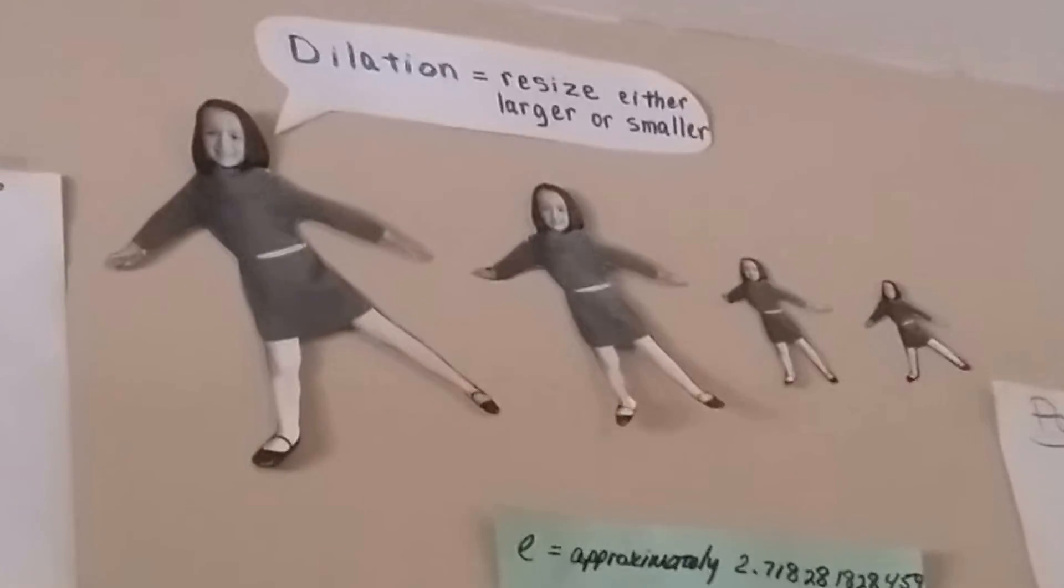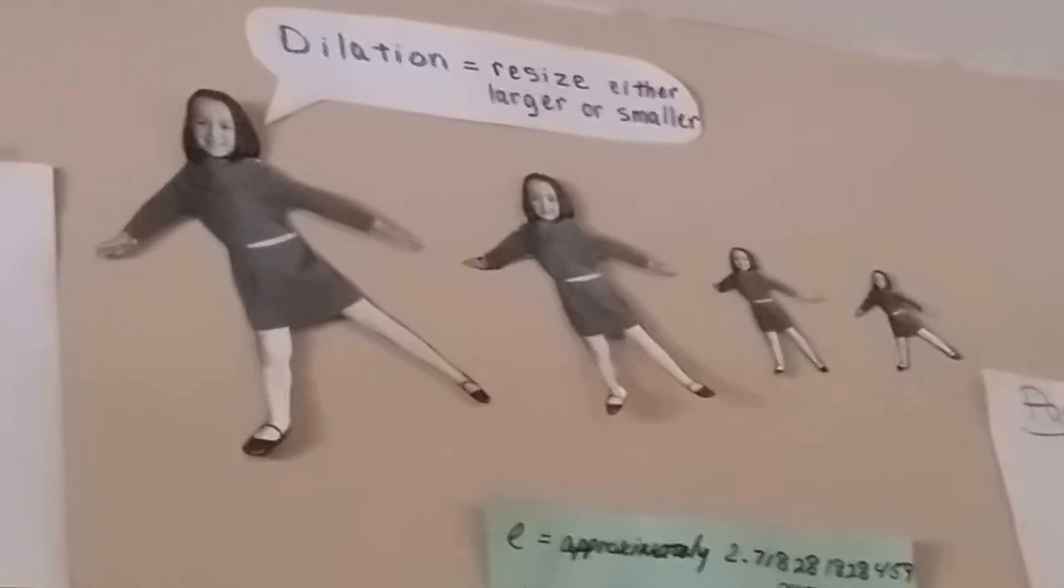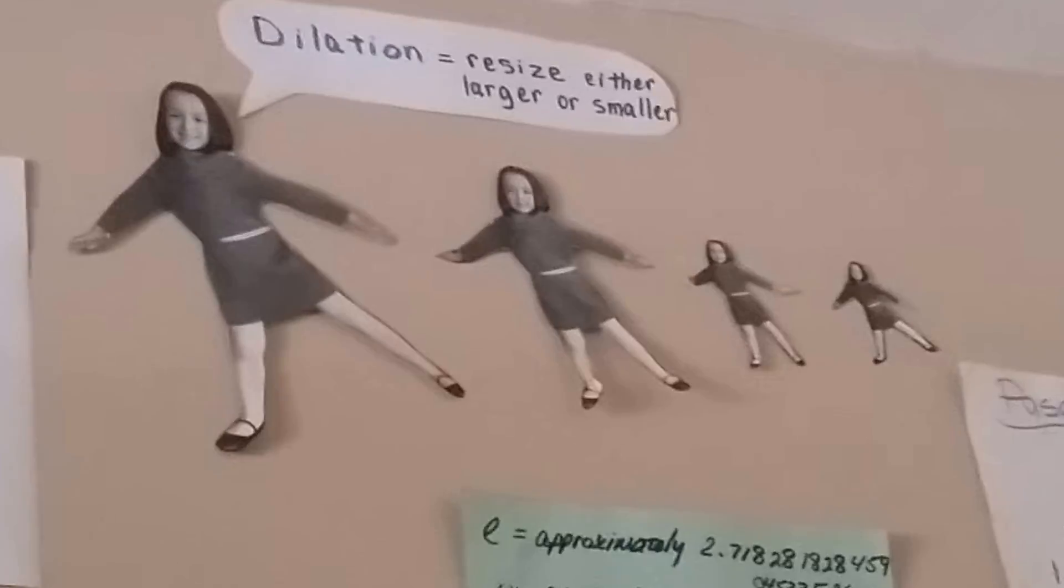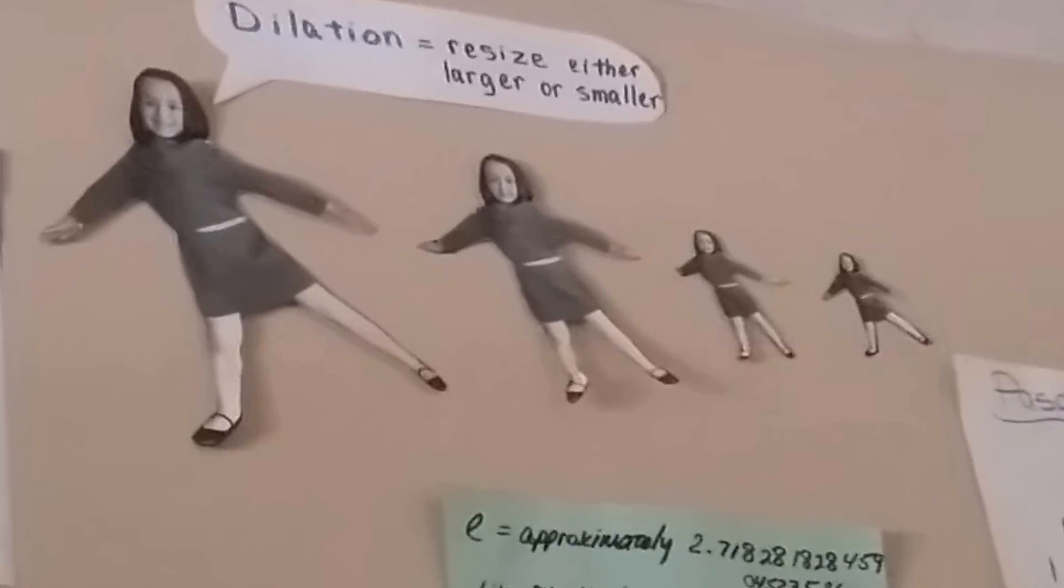So a dilation, I have a picture up here. I'll try to zoom in a little bit, and I've shown this before. This is Emma. A dilation is a resize, either larger or smaller. So you can look at it as Emma got smaller, or you can start with the small Emma and say Emma got larger. So it's like your pupils dilate when you're in a dark room, or you're in a real bright room. So your pupils will dilate.